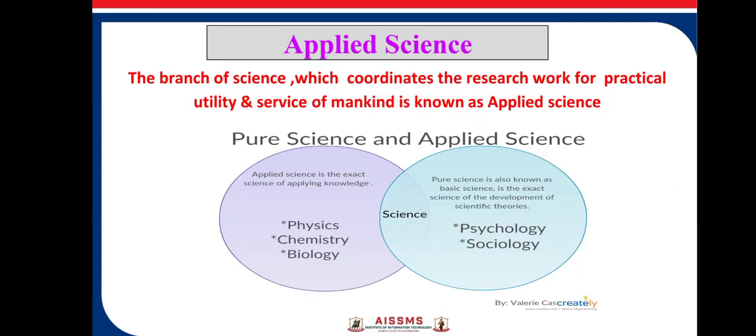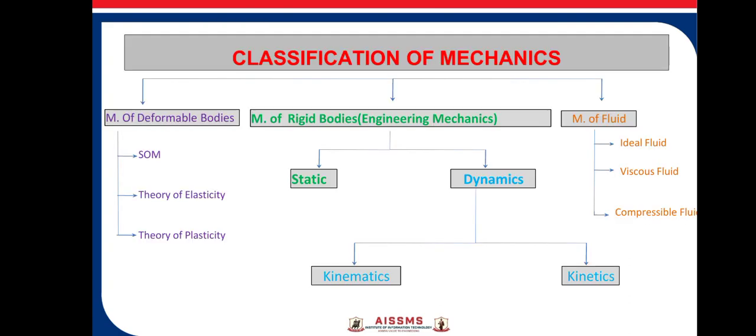What is applied science? It is the branch of science which coordinates research work for practical use and service of mankind. As shown in the image, applied science is the exact science of applying knowledge, whereas pure science — also known as basic science — is the science of development of scientific theories.